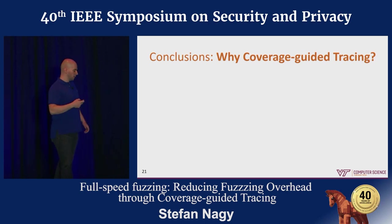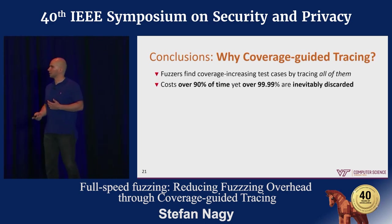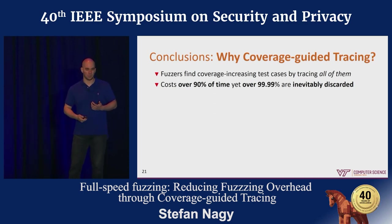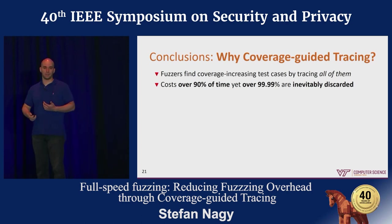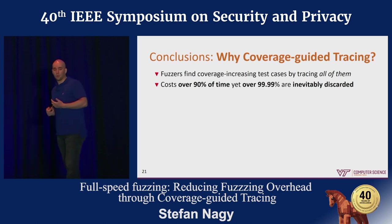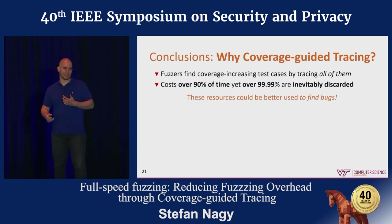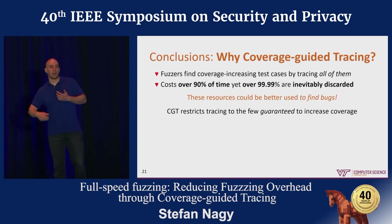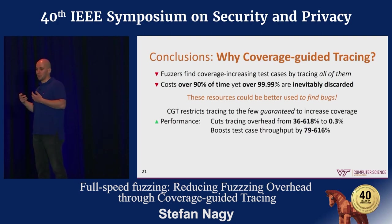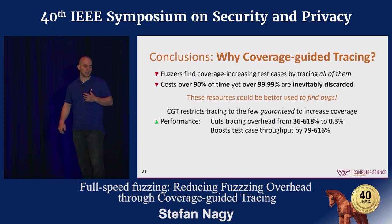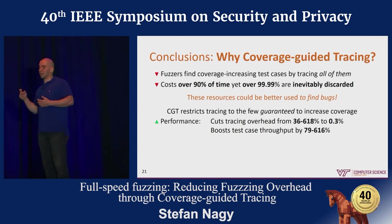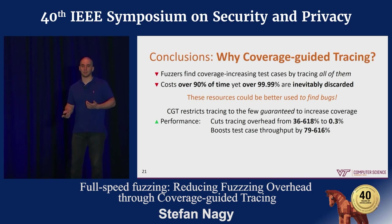In conclusion, why is coverage-guided tracing such a good complement to other approaches? Fuzzers spend over 90% of their time finding coverage-increasing test cases by tracing every single one and comparing coverage to some globally stored coverage — yet over 99.99% of those test cases, along with their code coverage, are completely discarded. We see this as a huge waste of resources. Coverage-guided tracing addresses this by restricting code coverage tracing to just those test cases guaranteed to increase code coverage, filtering out the rest at native execution speed. This results in a performance advantage: we reduce overall fuzzing execution overhead to about three-tenths of a percent, and boost overall test case throughput between 70 to 616%.